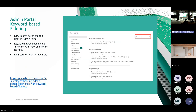Another update for admins: until now if you needed to find a specific setting to turn on or off, you'd use Ctrl+F to search on the web. Now there's finally a search box at the top right of the admin portal where you can search for features. You can even type 'preview' and everything currently in preview will show up — very useful to know what's in preview versus generally available.